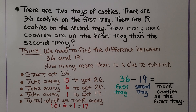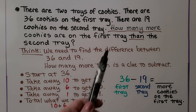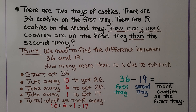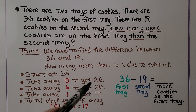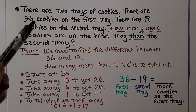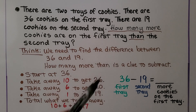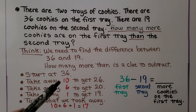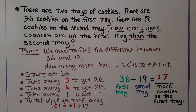There are two trays of cookies. There are 36 cookies on the first tray and 19 cookies on the second tray. How many more cookies are on the first tray than the second tray? We need to find the difference between 36 and 19. 'How many more' is a clue to subtract. We start at 36 and take away 10 to get to 26. We take away 6 because there's a 6 in 36 — now we're at 20. We need to get to 19, so we take away one more. We took away a 10, a 6, and a 1 — we took away 17. There are 17 more cookies on the first tray than the second tray.